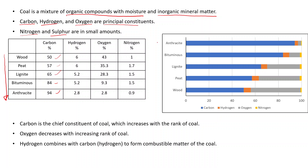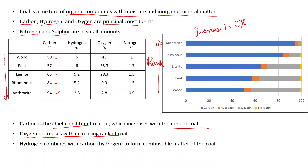If you look at this diagram, this shows the increasing rank of coal from wood to anthracite. The blue color represents carbon, shown here as a percentage. There is a marked increase in carbon percentage. The three types of coal — lignite, bituminous and anthracite — are all distinguished on the basis of carbon content. Carbon is the chief constituent of coal which increases with rank.